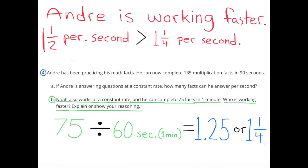B. Noah also works at a constant rate and he can complete 75 facts in one minute. Who is working faster? Explain or show your reasoning. One minute is equivalent to 60 seconds. So to stay consistent with problem A, I'm going to change one minute to 60 seconds.